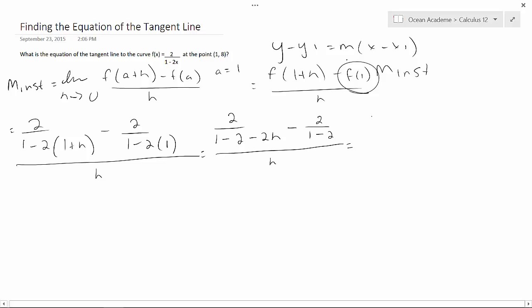So 2/(1-2-2h) - 2/(1-2) all over h. Simplify again: 2/(-1-2h) - 2/(-1-2h) minus, I'm just going to put this in brackets, 2/(-1).